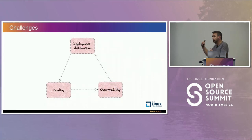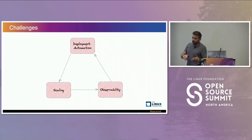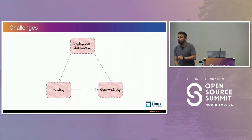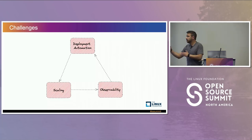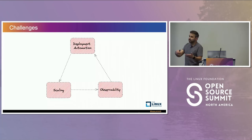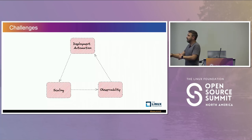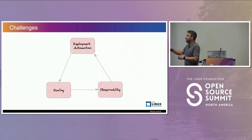So even with GitOps, there are always challenges. One challenge is: how do you automate the deployments? And as you're doing automation, how do you scale? And as you're scaling, you need observability. And as you deploy observability stacks, you need to automate that. And then there's more scaling. It gets complicated.